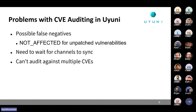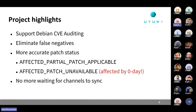Now I'll talk about some project highlights — additions and improvements this project brings to Uyuni. The first addition is deep-end CVE auditing. Currently you can't audit deep-end systems with CVE, but after this project is integrated, that will be made possible. Another highlight is that we eliminate false negatives — the problem I described in the previous slide is now solved.